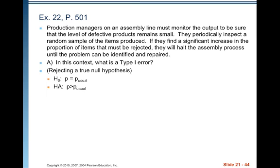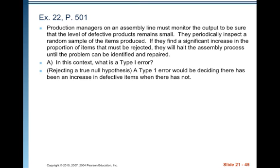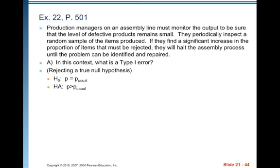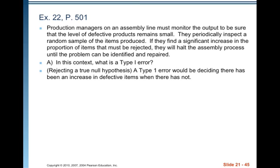The null is that the proportion equals the usual proportion; the alternative is that it's greater than the usual proportion. So a Type 1 error would be deciding there has been an increase in defective items when in fact there has not been an increase. The truth is it's the same as always, but we decide it is bigger. A consequence would be shutting down the assembly process and looking for a problem you might not find, wasting time and increasing costs.